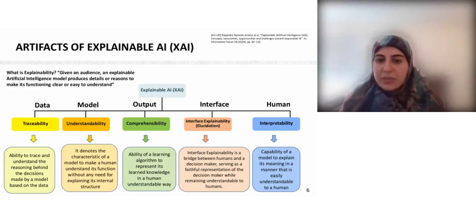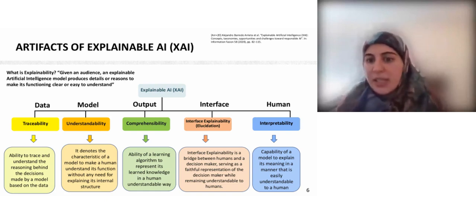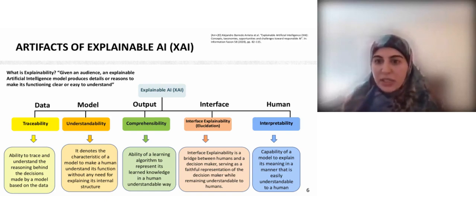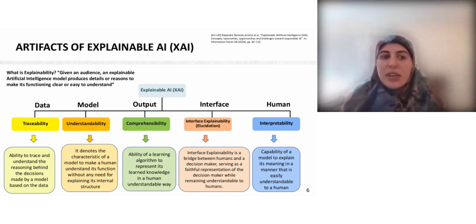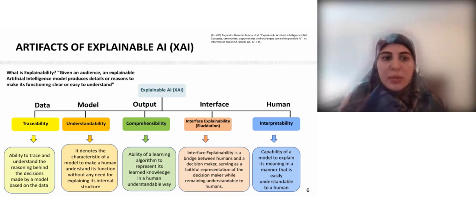So what is explainability in machine learning? We refer to the definition from ARIETTA: given an audience, an explainable AI model provides each field or reason to make its behavior clear and easy to understand. We have used the five main artifacts of explainability developed by ARIETTA in the data analysis chain. The first one is traceability, which is the ability to trace and understand the data in the decision-making process.